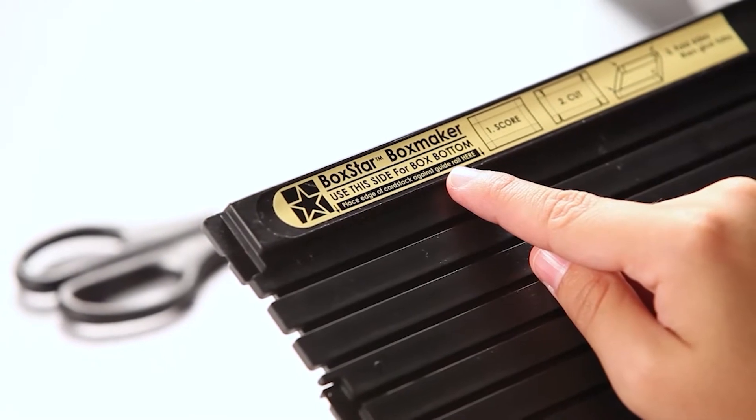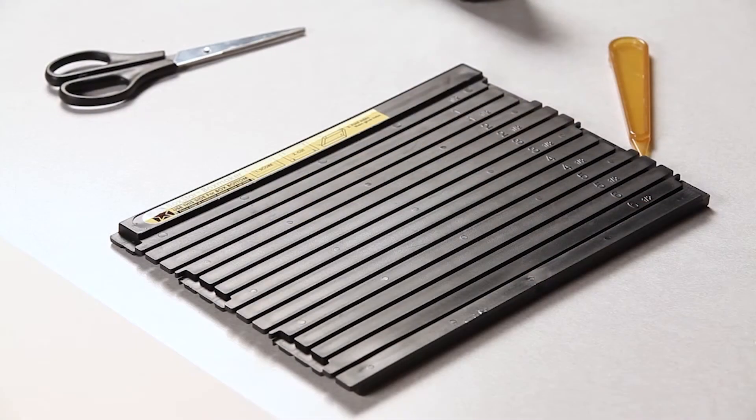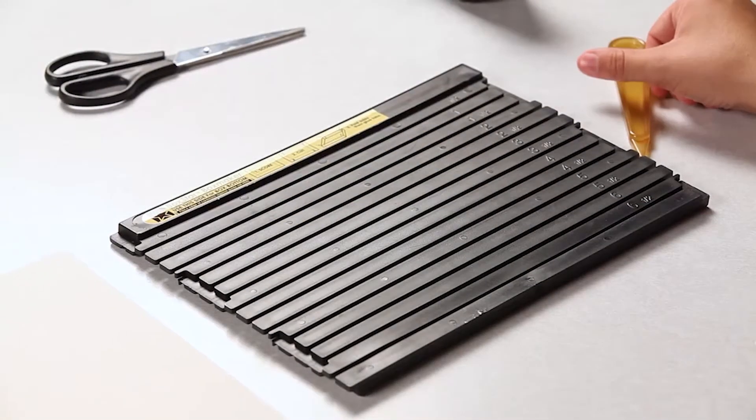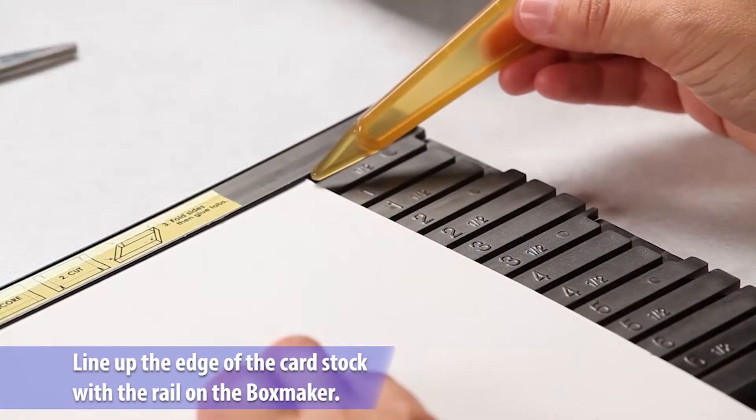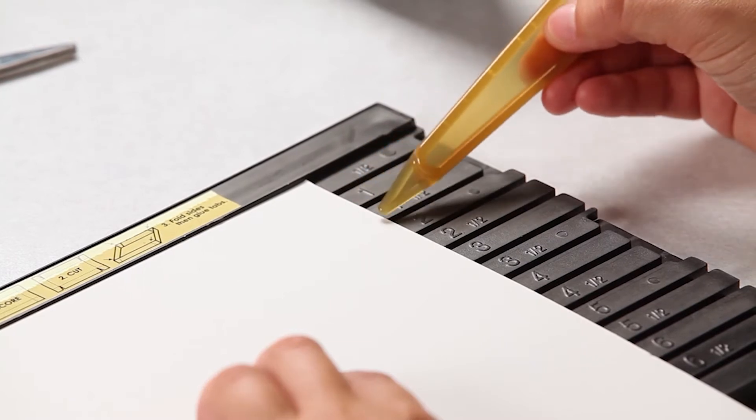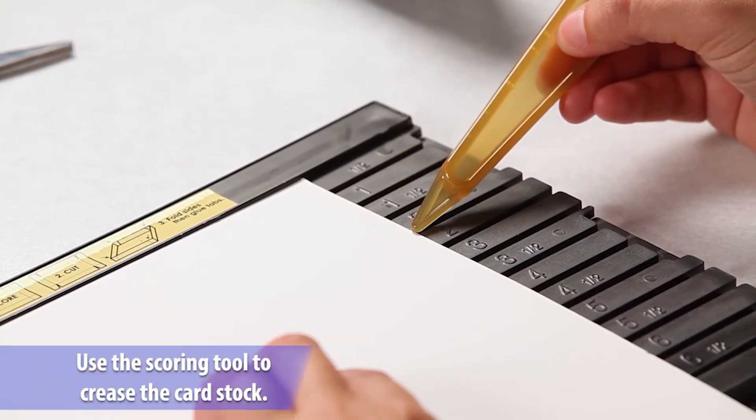Let's start with the side labeled bottom. Let's make a box with two inch sides. Line up the edge of the cardstock with the rail on the box maker. Using the scoring tool, crease the cardstock along the two inch groove.